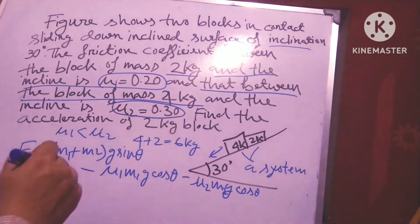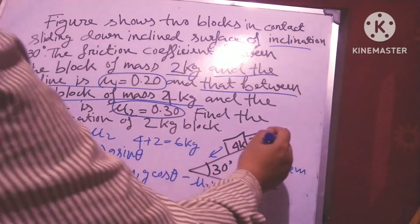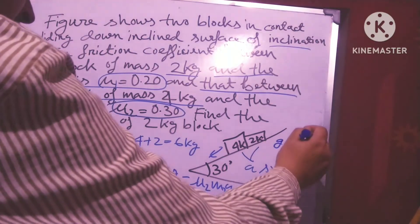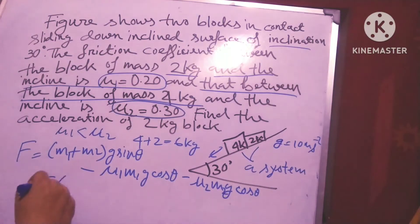Now if I put in the values, I get 6 × g × sin 30°. G equals 10 m/s². I get 6 × 10 × ½, because θ equals 30 degrees.